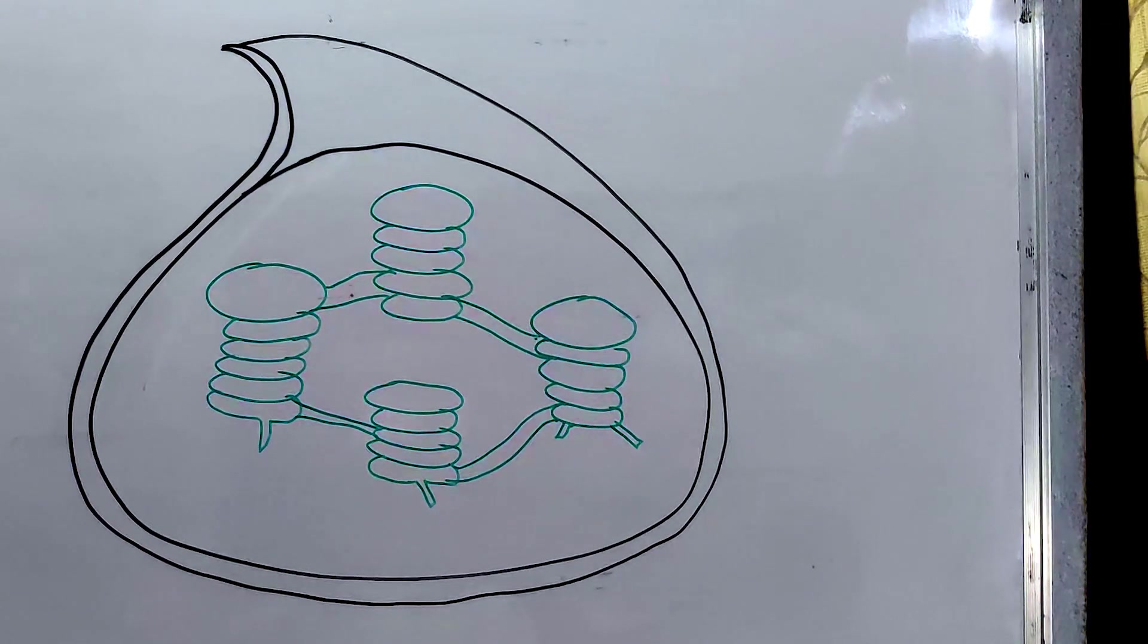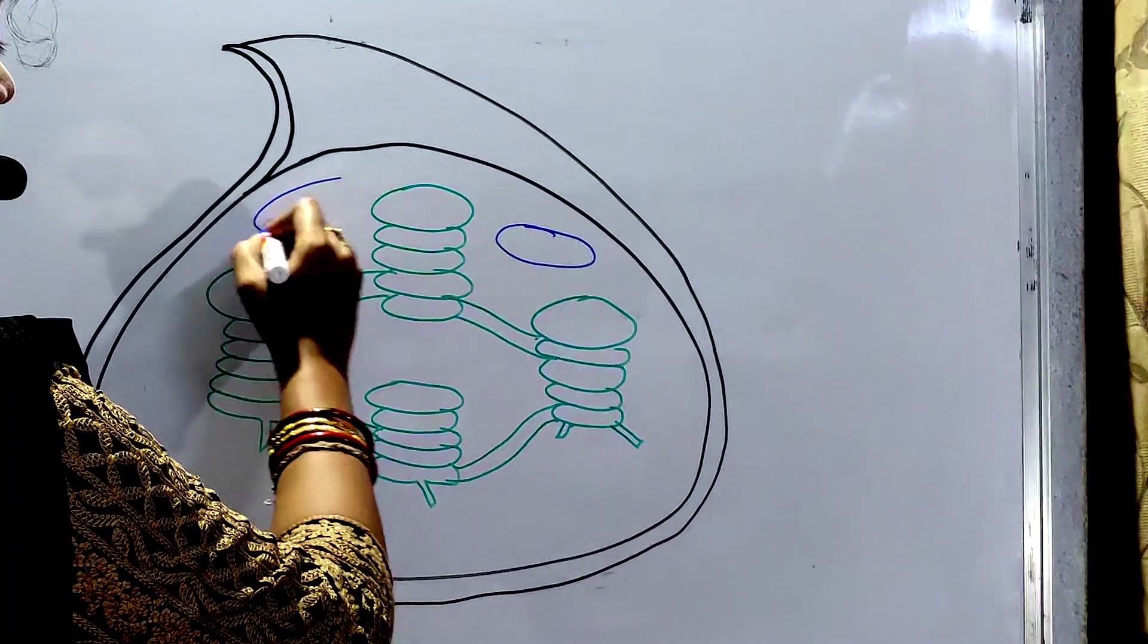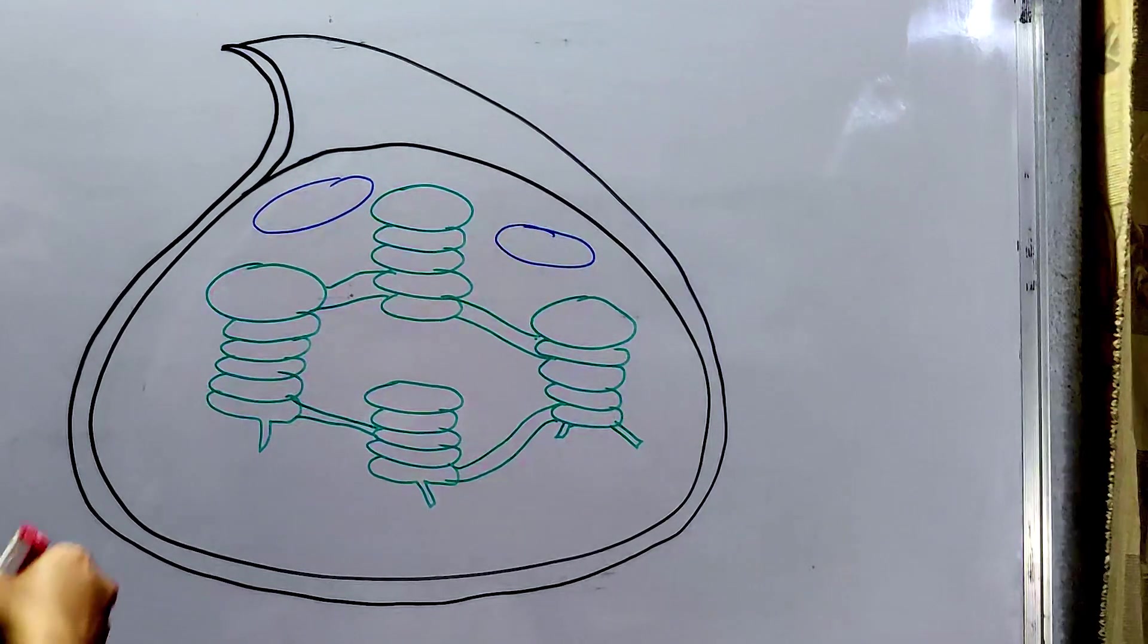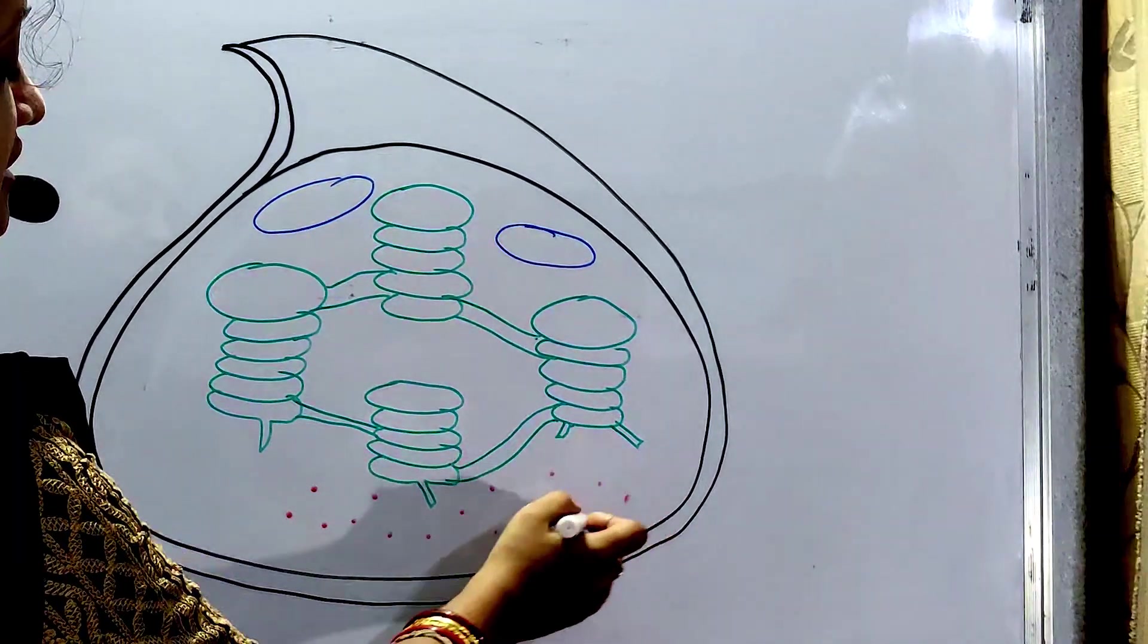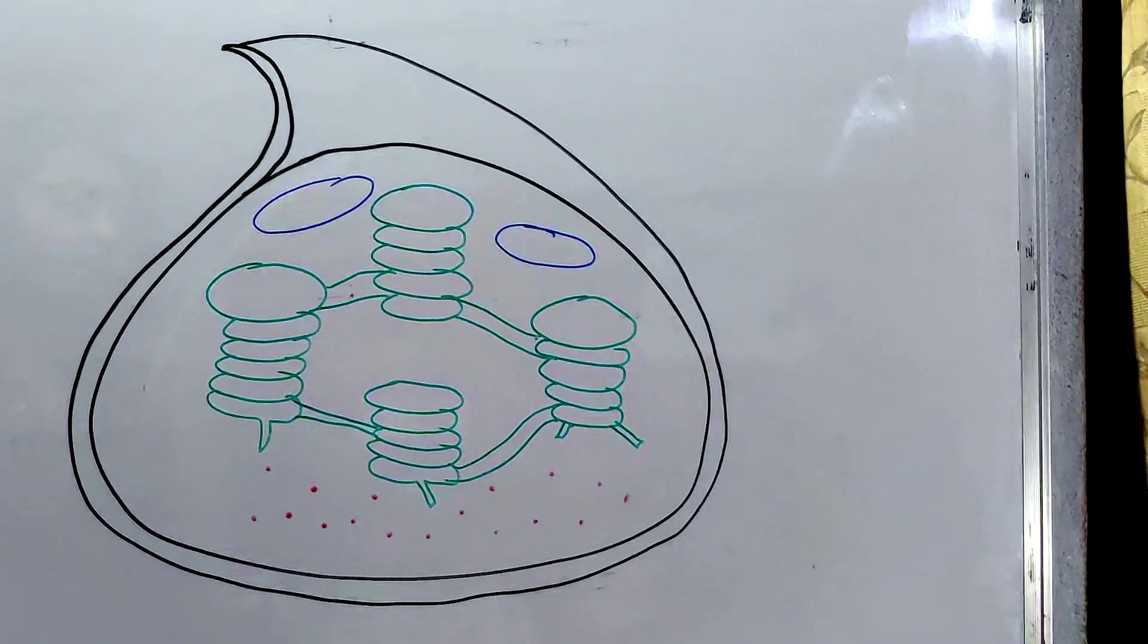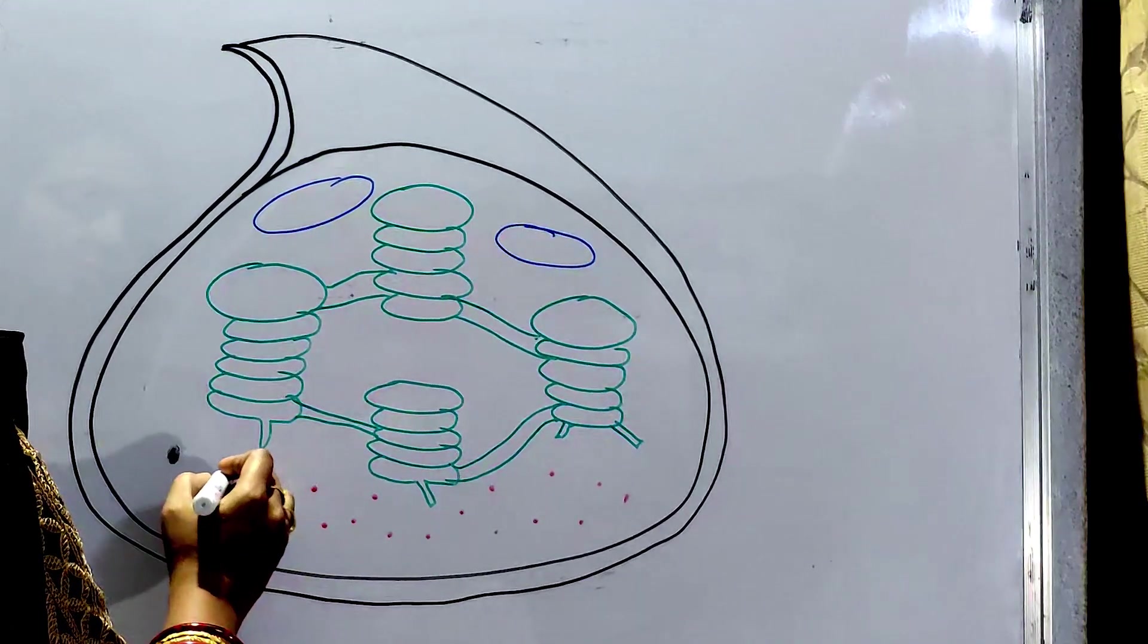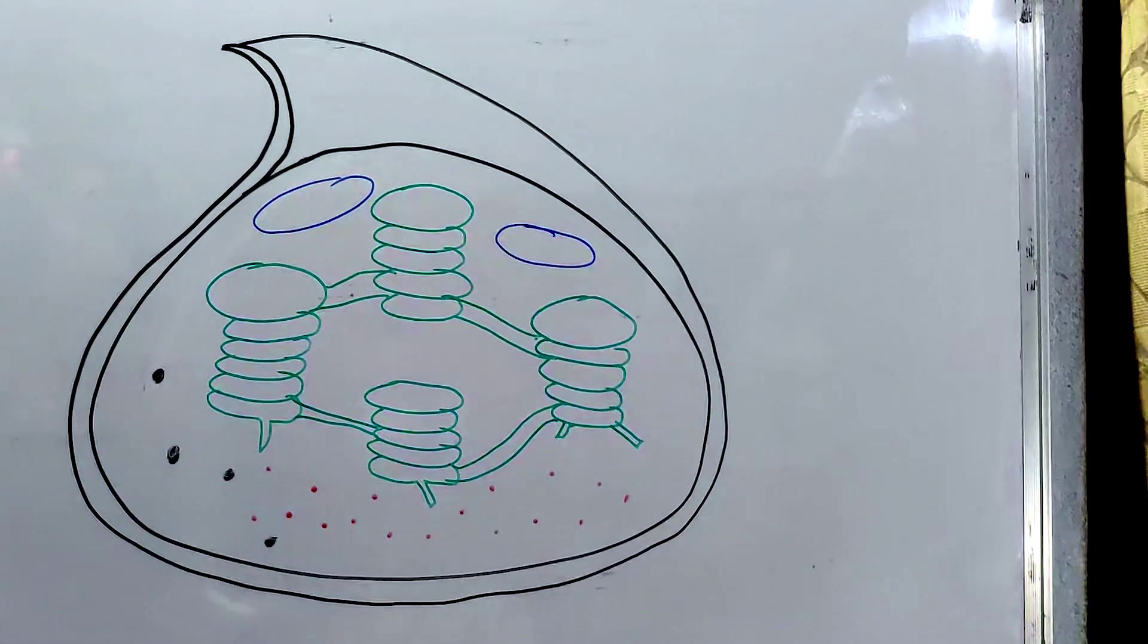Let us draw some starch grains. We can find also proteins. Some proteins are found freely in the matrix, that means stroma. Also, some lipid droplets can be seen in the chloroplast.